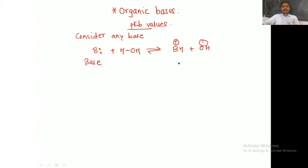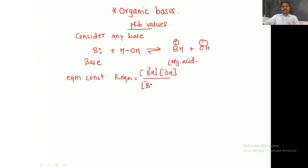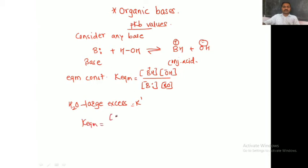Here B is our base and BH⁺ is the conjugate acid. Now consider the equilibrium constant K for this reaction. K equilibrium is equal to the concentration of products divided by the concentration of reactants. Since H₂O is used in large excess, it is practically considered constant.